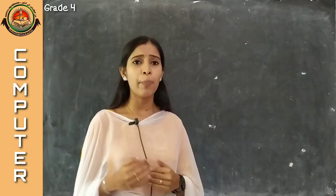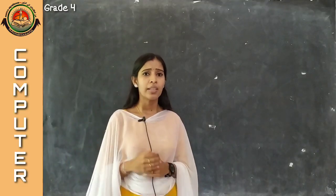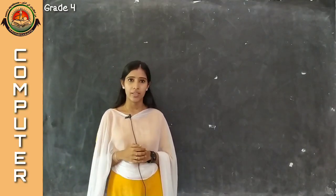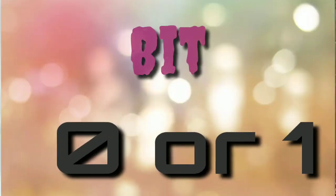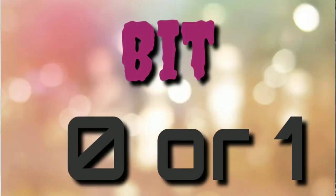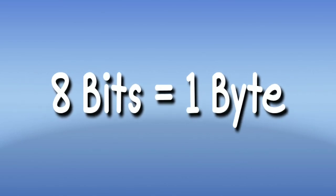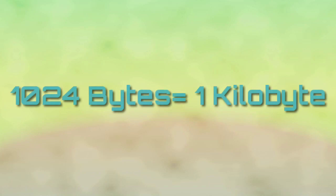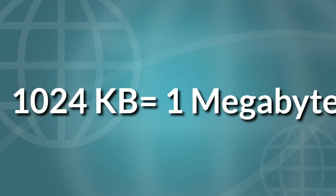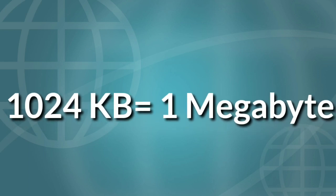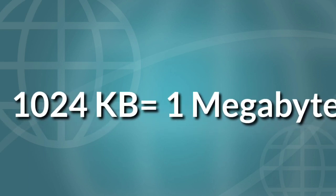Before starting the secondary storage devices, we can discuss about the measuring units of memory. The basic unit is a bit. One bit is either 0 or 1. Eight bits together are called one byte. 1024 bytes is equal to 1 KB, which is kilobyte. 1024 KB is 1 MB, megabyte.